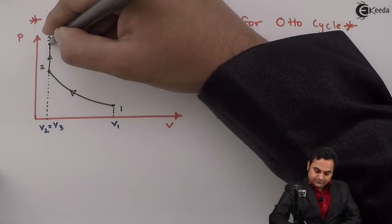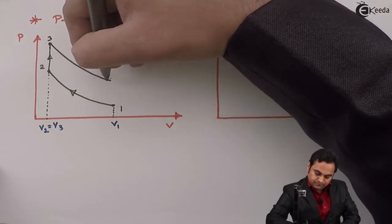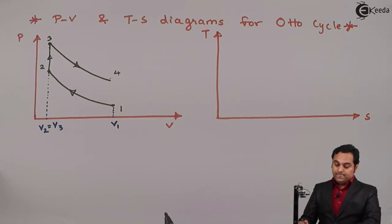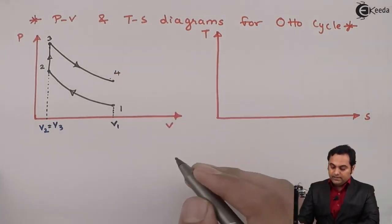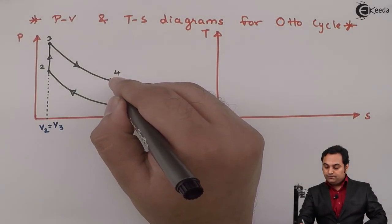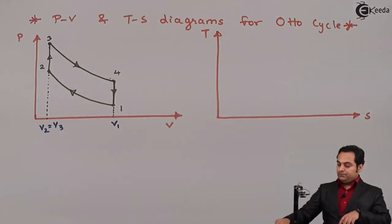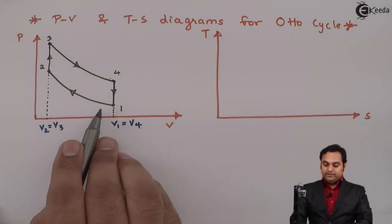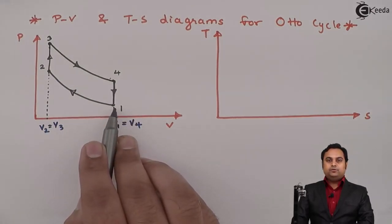Process three to four is reversible adiabatic, that is isentropic expansion. The expansion process follows a curve from point three to four — at point three the volume is less, at point four the volume is greater. After expansion, there is constant volume heat rejection from four to one, so V1 is equal to V4.